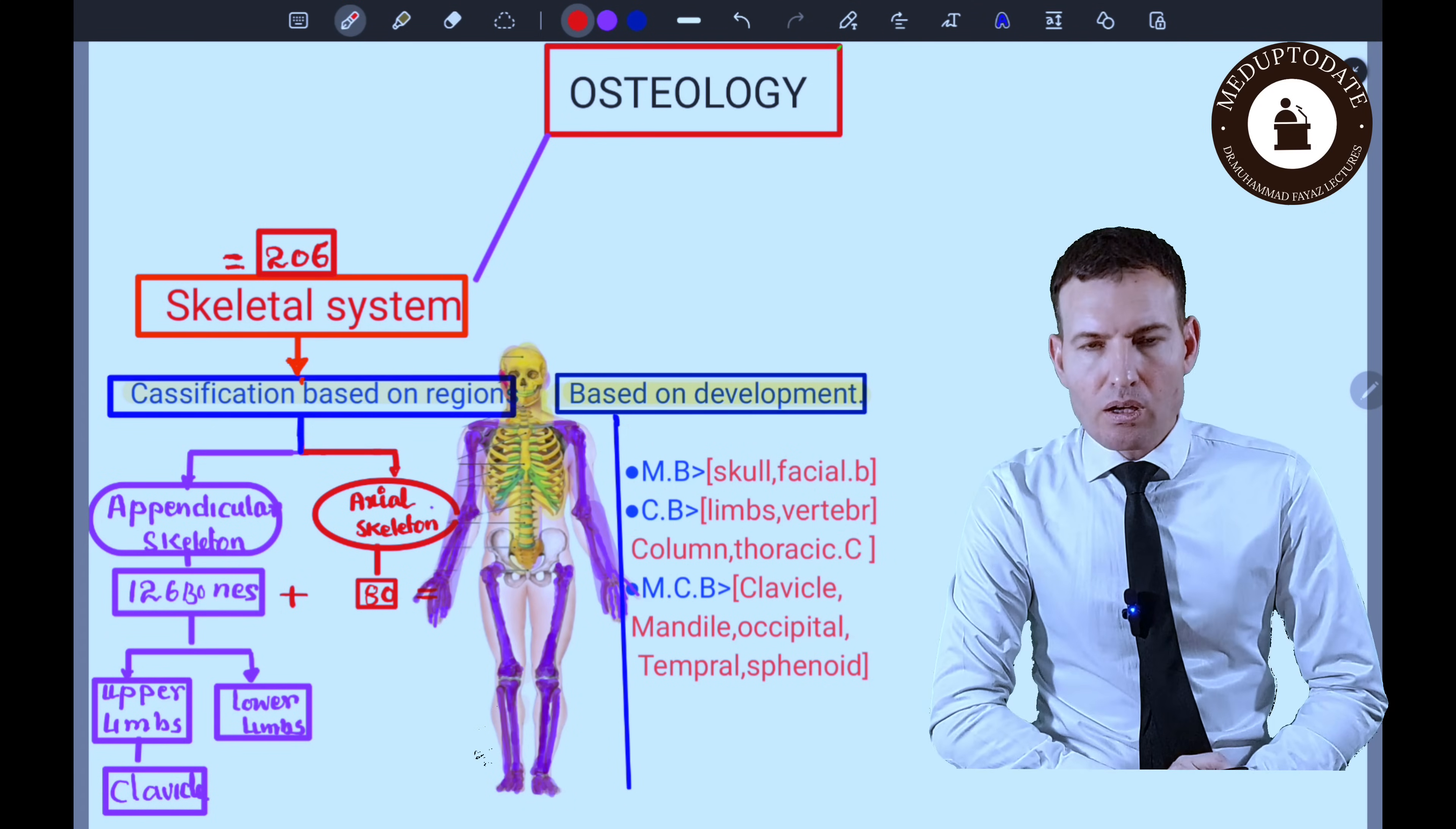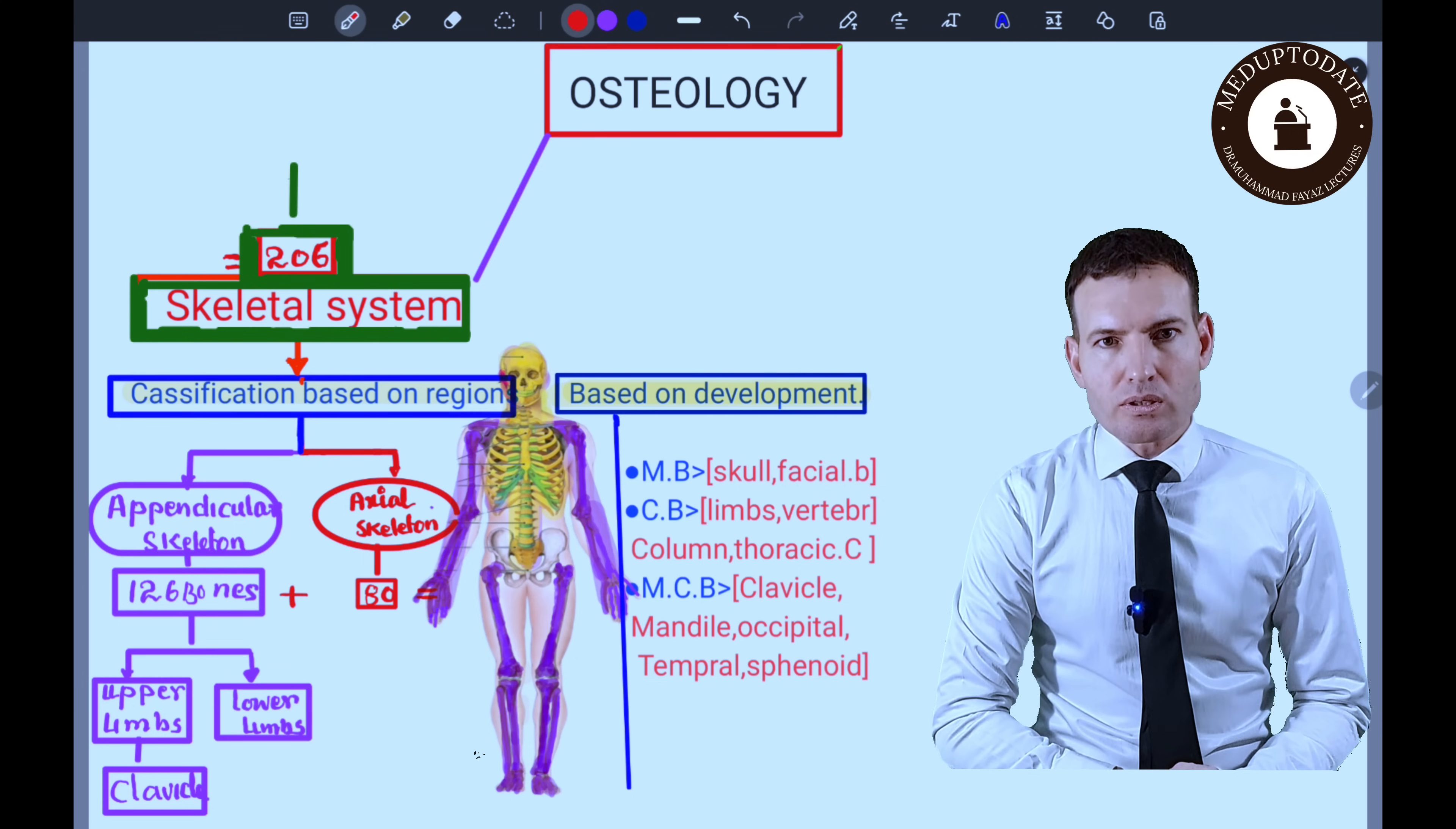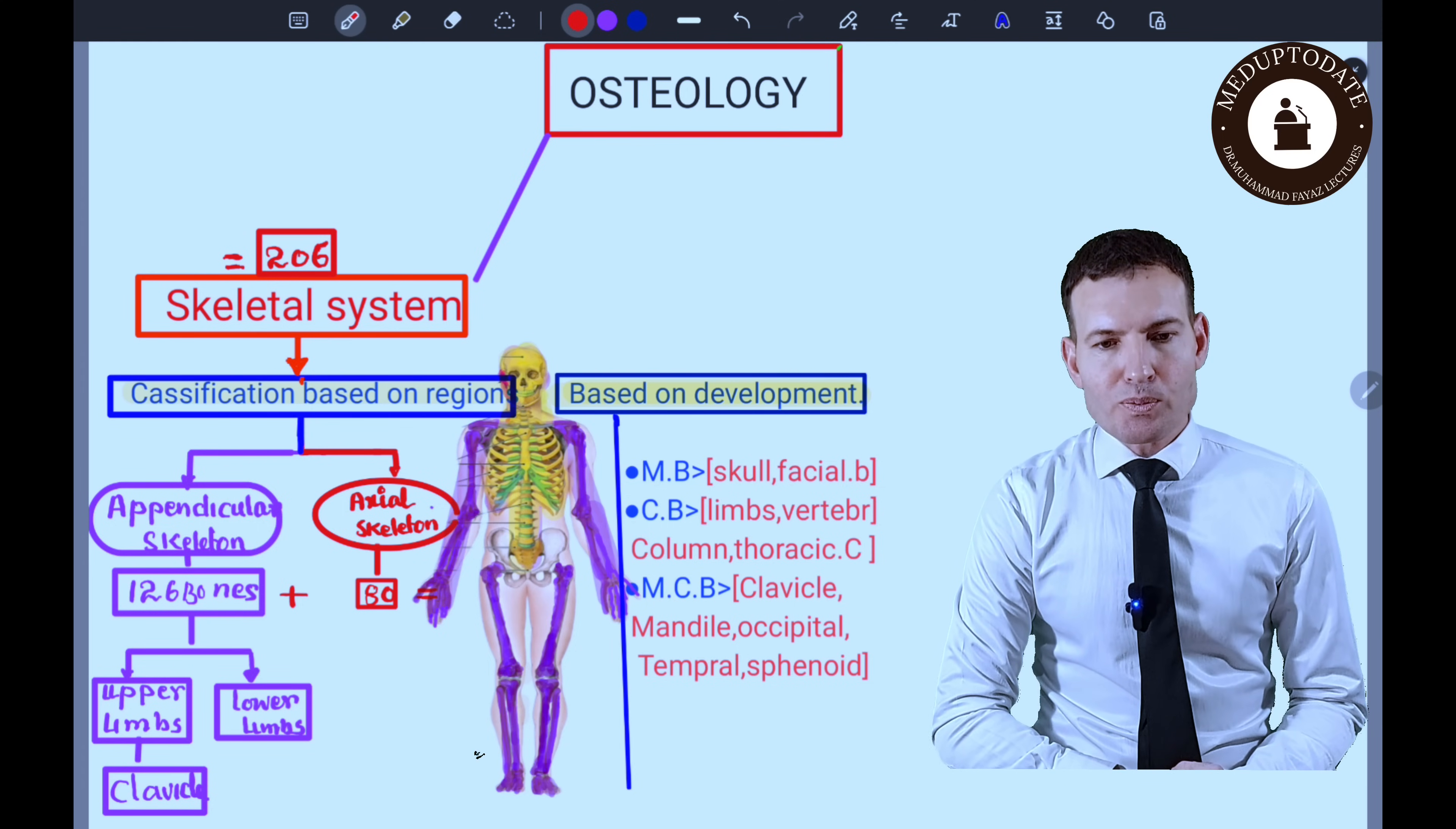In this lecture we'll discuss clinical aspects of osteology. Before we go into that, I'd like to explain the human skeleton. In the human skeleton we have a total of 206 bones approximately. It may be less or more depending upon different populations and ethnicity.